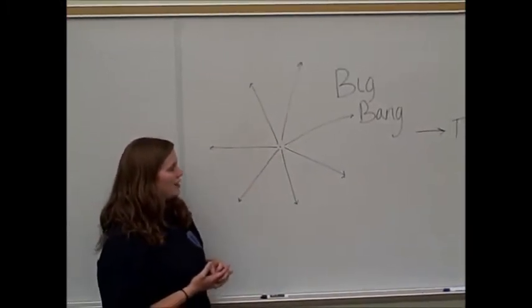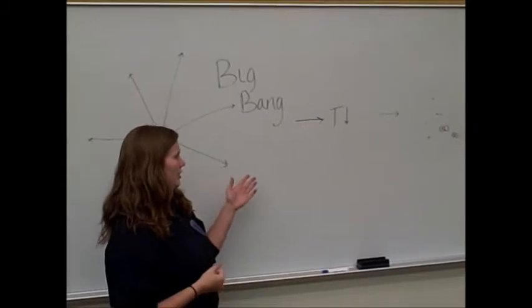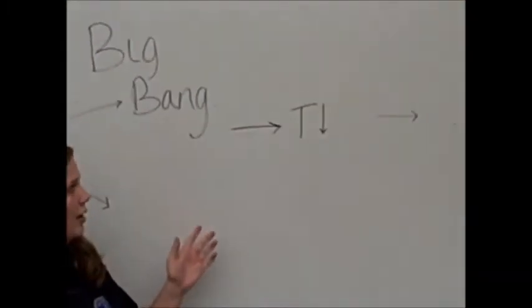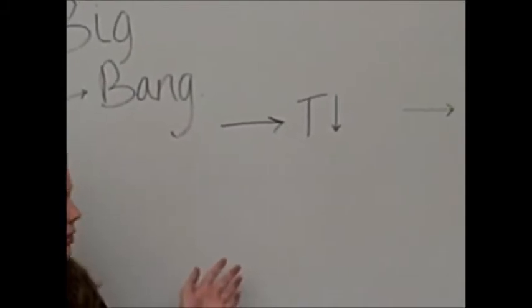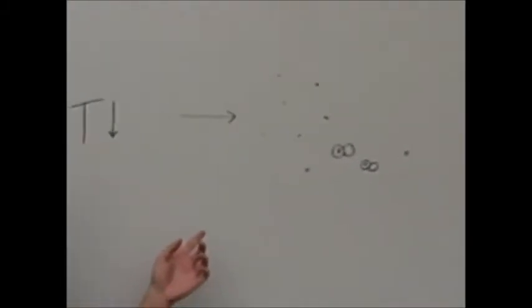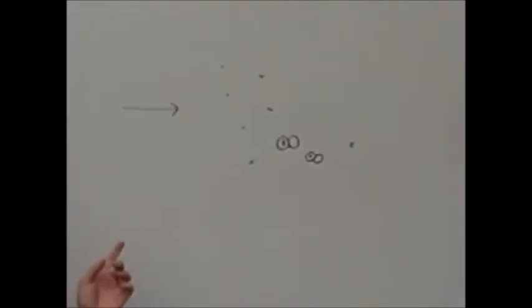Well, after the Big Bang happened, temperatures began to decrease as our universe expanded to what we know it as today. Because the temperatures fell, particles created in the Big Bang started moving more slowly, making them more able and more likely to stick together.